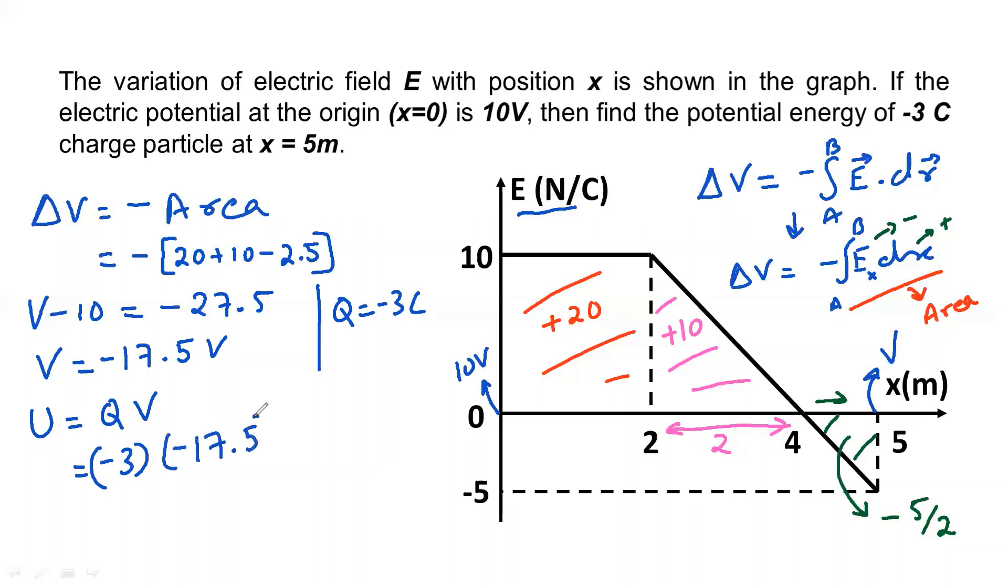It's going to be minus 3 into minus 17.5. So the value is 3 times 17.5, which is 45 plus 7.5, that is 52.5. So the answer is 52.5 joules. So that was the problem: how to calculate potential energy of a given charge from a given E-x graph.